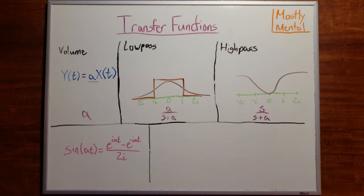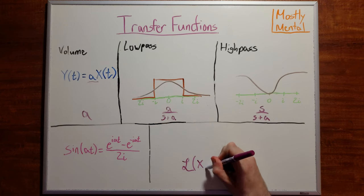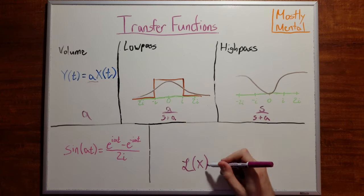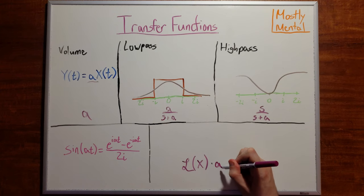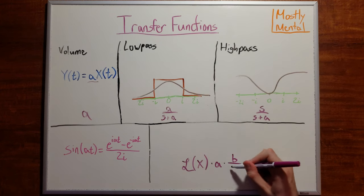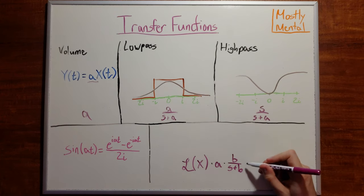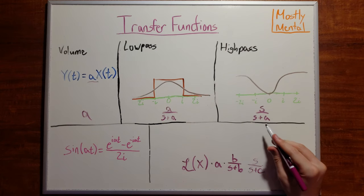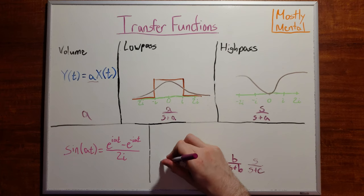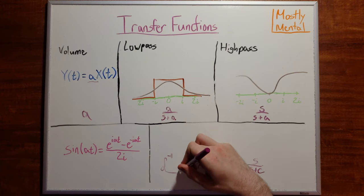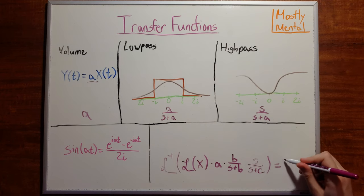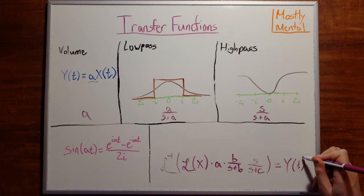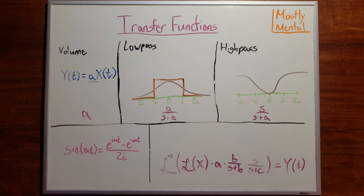How does this let us attenuate a sound? Well, we take the Laplace transform of our input, multiply by a constant to adjust the volume, multiply by b over s plus b for the low pass, and by s over s plus c for the high pass. And then we take the inverse Laplace transform, which gives us our output. That's how we can do attenuation using transfer functions.